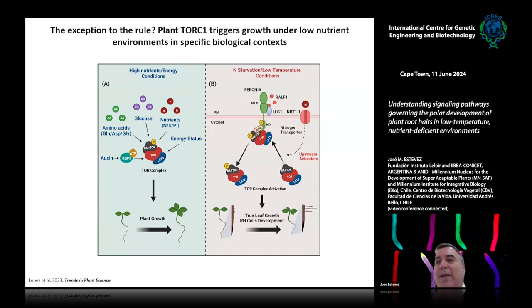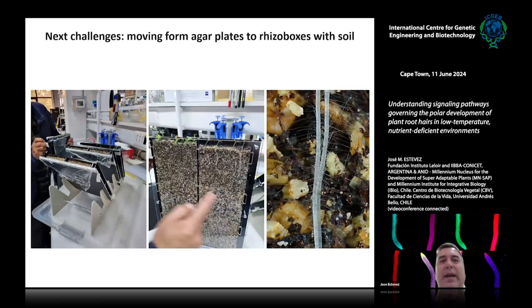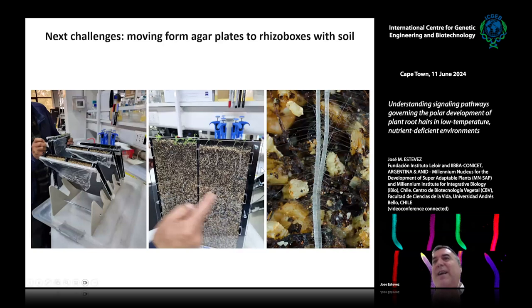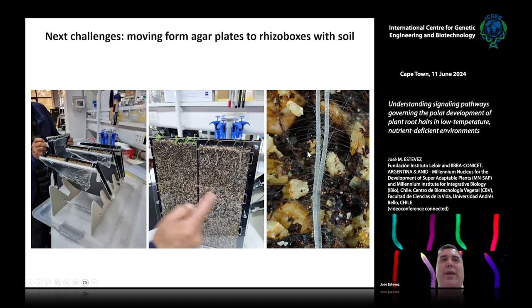We find this very fascinating and are trying to figure out why TOR behaves in the opposite way in root hairs. Everything shown so far is on agar plates. The lab is now moving into rhizoboxes and rhizotrons to validate all these results using real soil. We can track root hairs very nicely on rhizoboxes, and hopefully we'll have results to validate the agar media findings and move into more realistic situations.